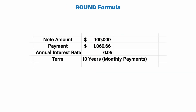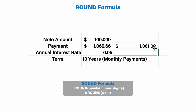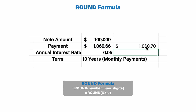One of the best ways to avoid rounding issues in Excel is by using the ROUND formula. Let's say we want to round the payment to the nearest dollar. You enter ROUND, choose the number you want to round, and choose the number of decimal places. Put zero to round to the nearest dollar, or put one decimal place to round to the nearest tenth. So this is the ROUND formula.